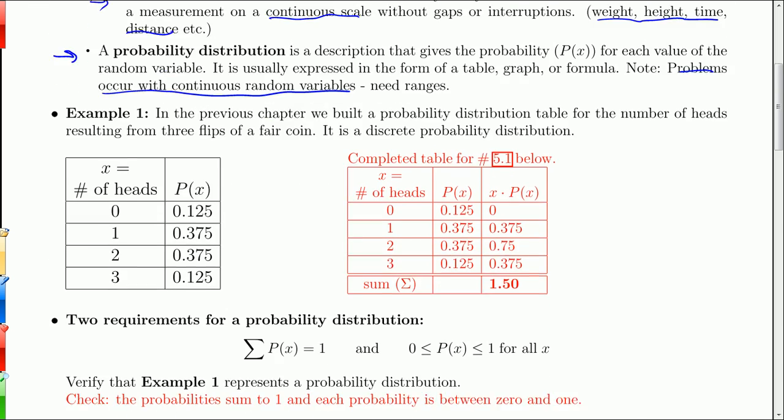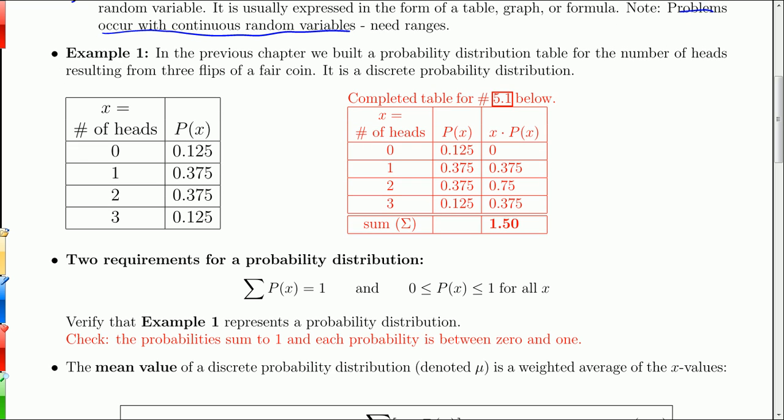We did this back in chapter 4.2. If you flip a coin three times, what's the probability that you get zero heads, one, two, and three? We built that tree diagram where we had heads, tails, heads, tails, heads, tails. Remember the tree diagram?